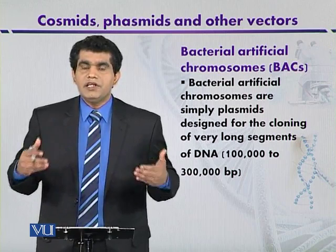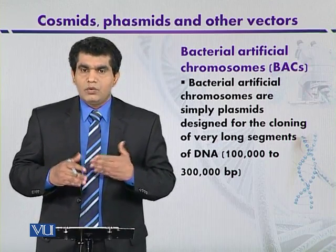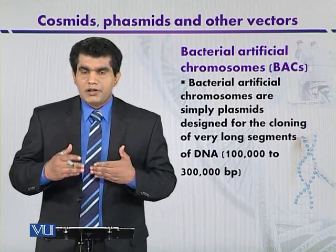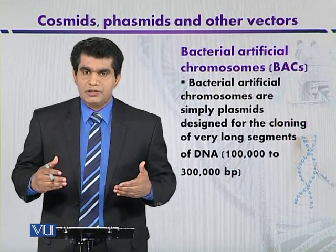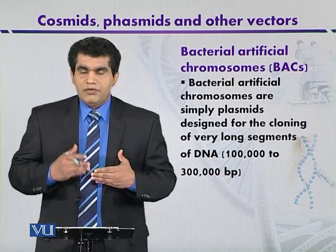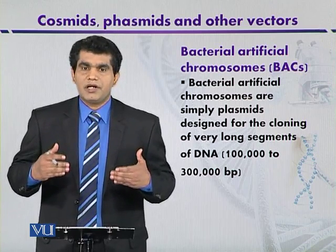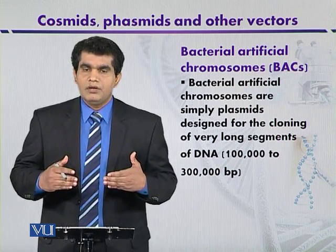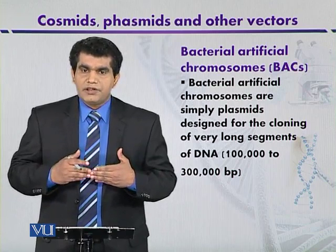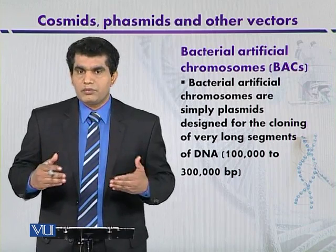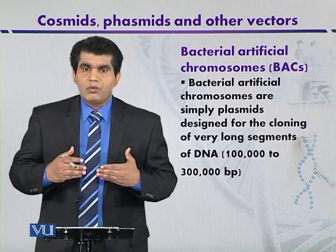This allows the BAC to divide independently of the host chromosome. BACs also have selectable markers such as the chloramphenicol antibiotic resistance gene. They also use the LacZ gene as a selectable marker. When foreign DNA is inserted within the LacZ gene, the synthesis of beta-galactosidase is inhibited. The LacZ gene normally synthesizes beta-galactosidase, which can degrade the compound 5-bromo-4-chloro-3-indolyl-beta-D-galactopyranoside, simply called X-gal.